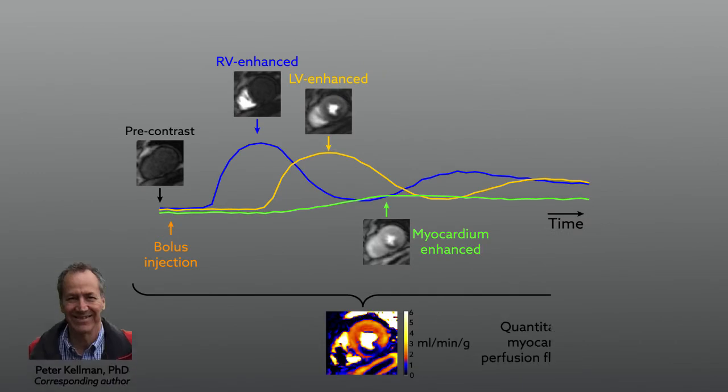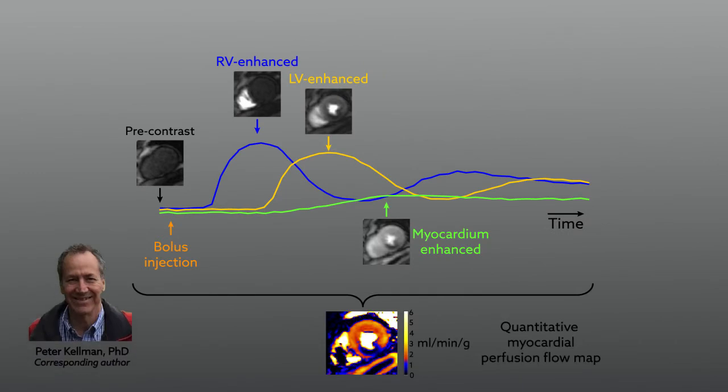By providing a single map that's color-coded to differentiate ischemic from normal tissue, the need to examine hundreds of raw images is eliminated, making it simpler and faster to analyze the data.